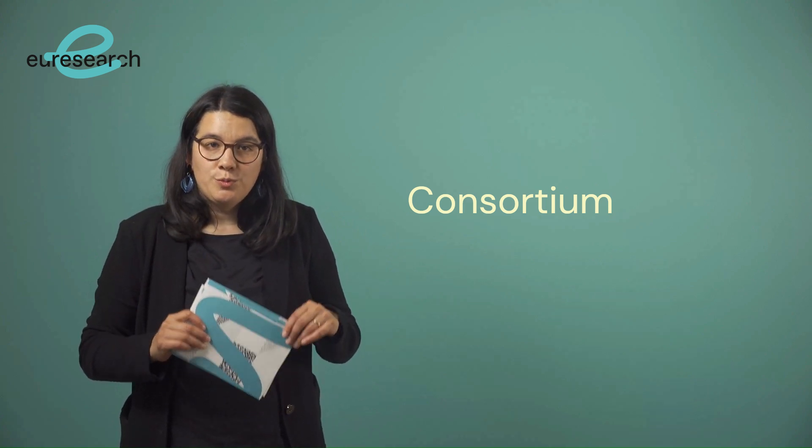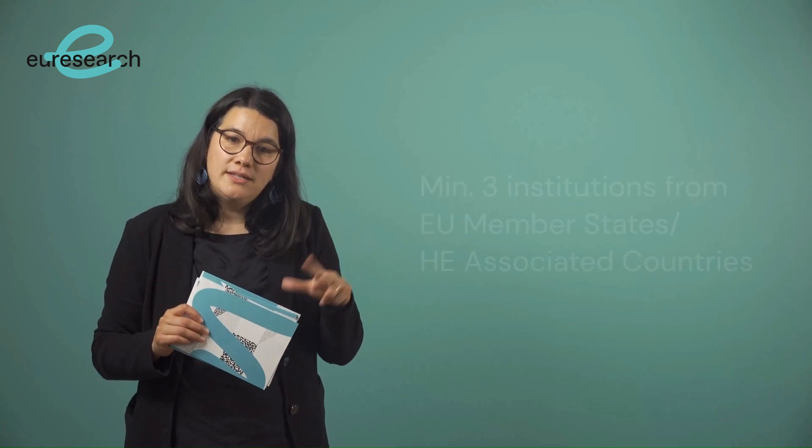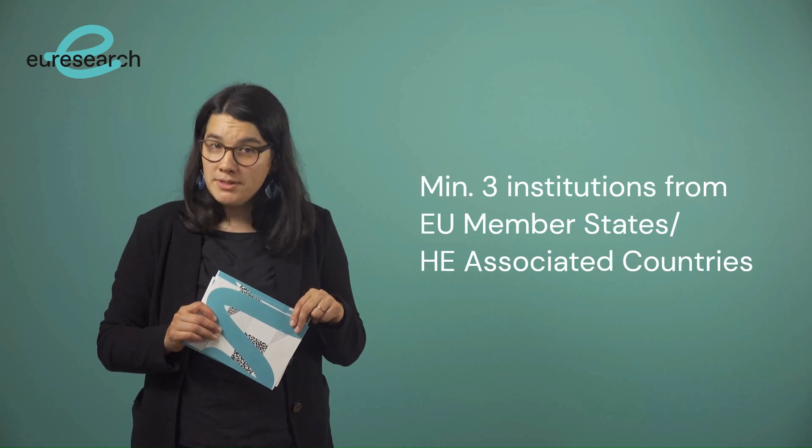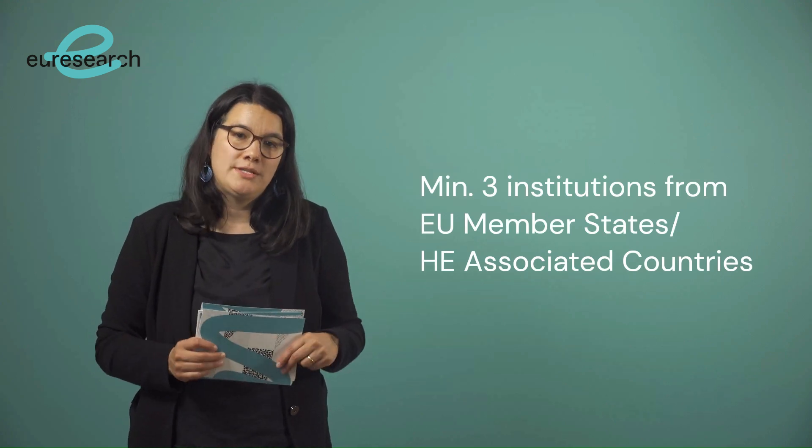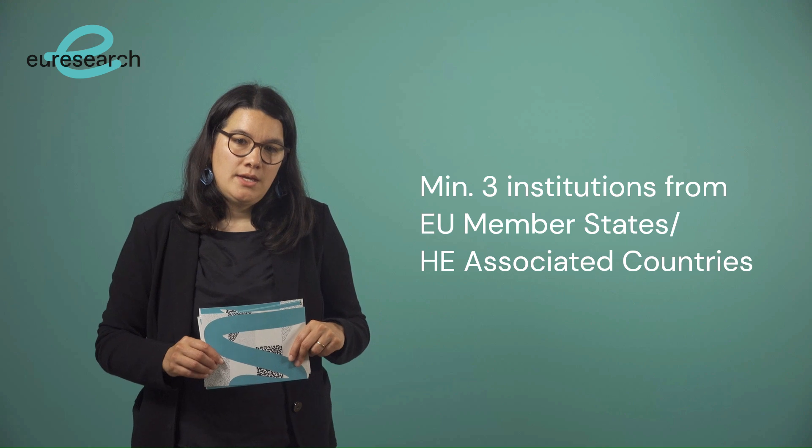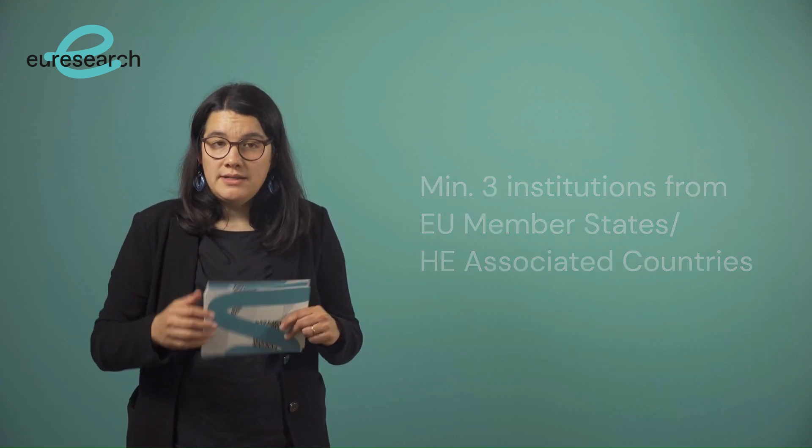A consortium should comprise of at least three entities from different EU member states or Horizon Europe associated countries. There is one coordinator and several beneficiaries from an EU member state or associated country, and it is possible to have associated partners included.